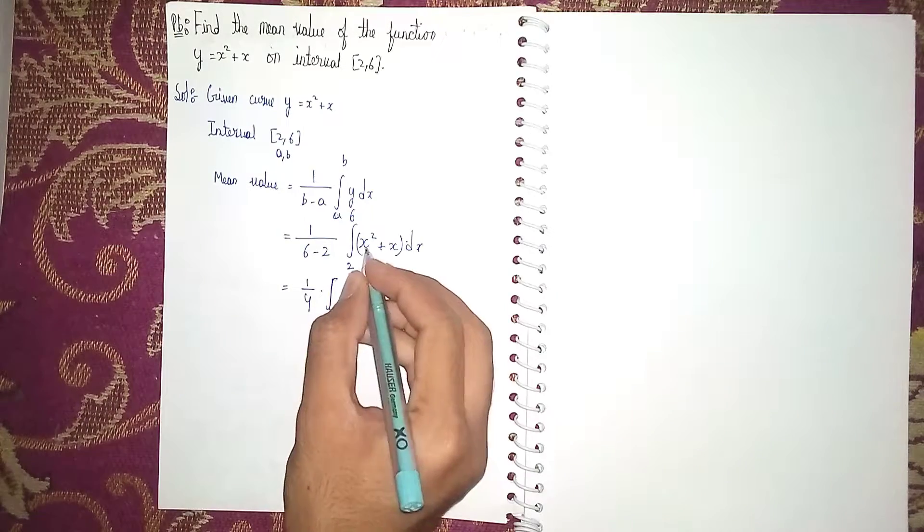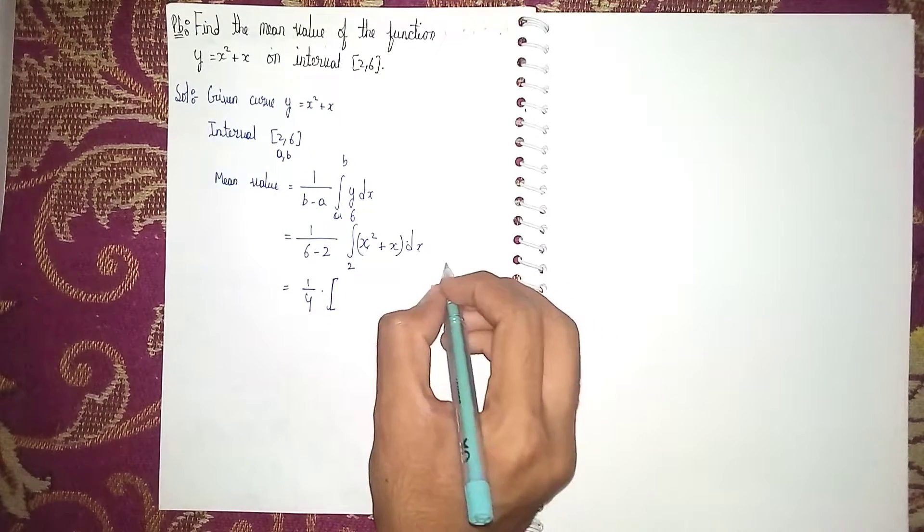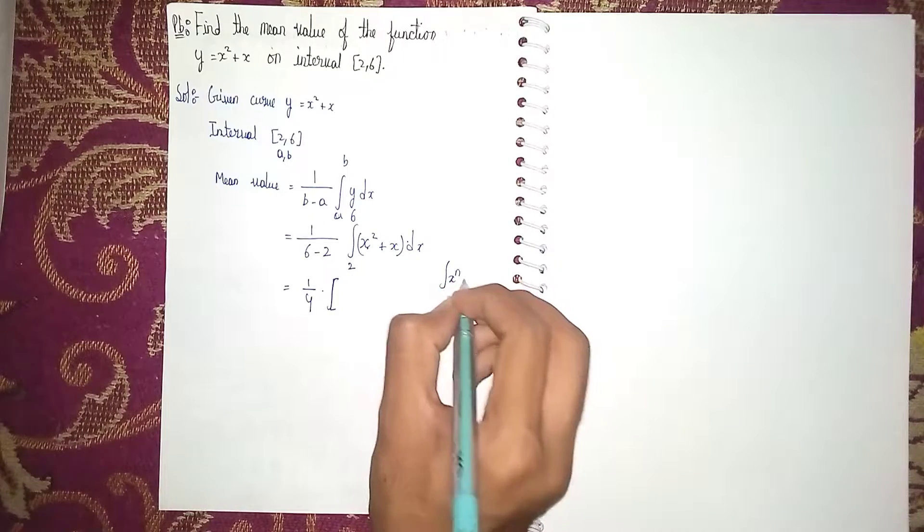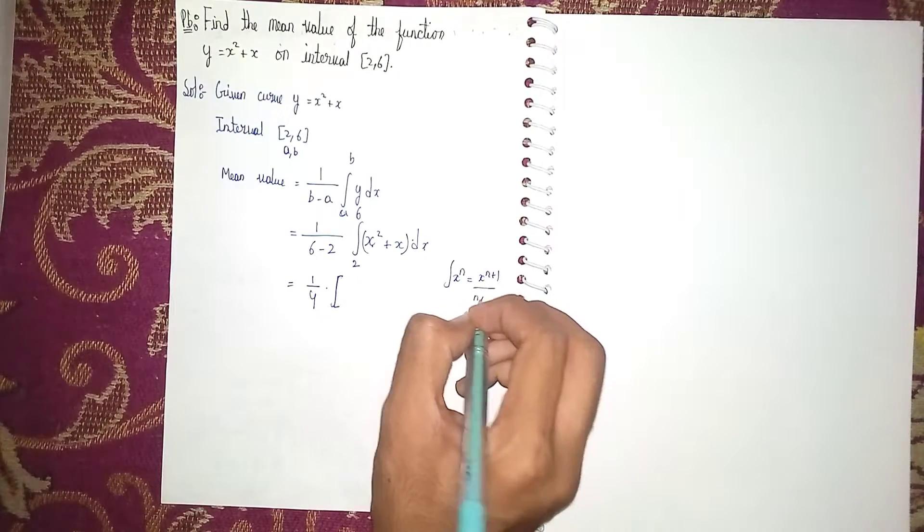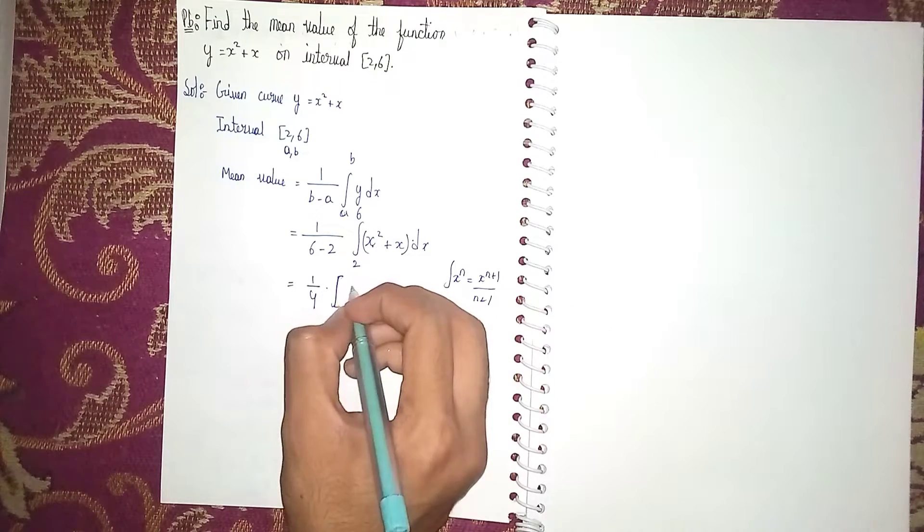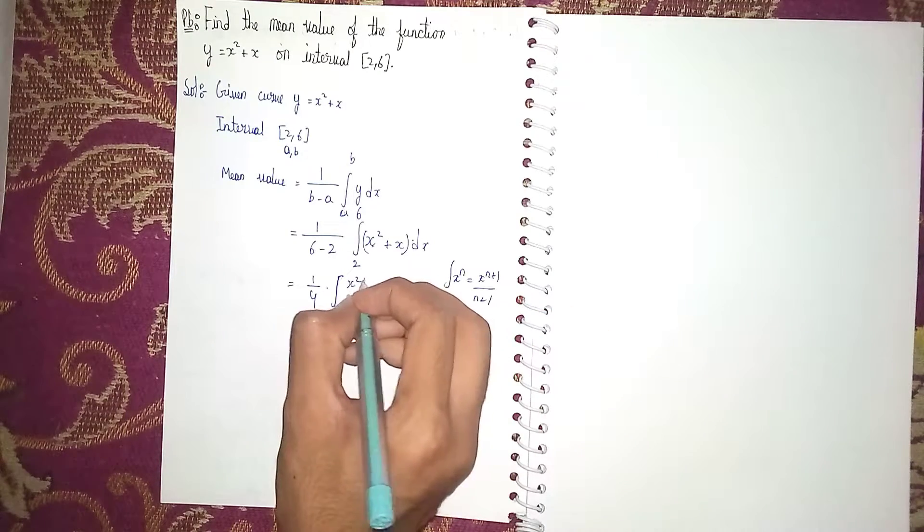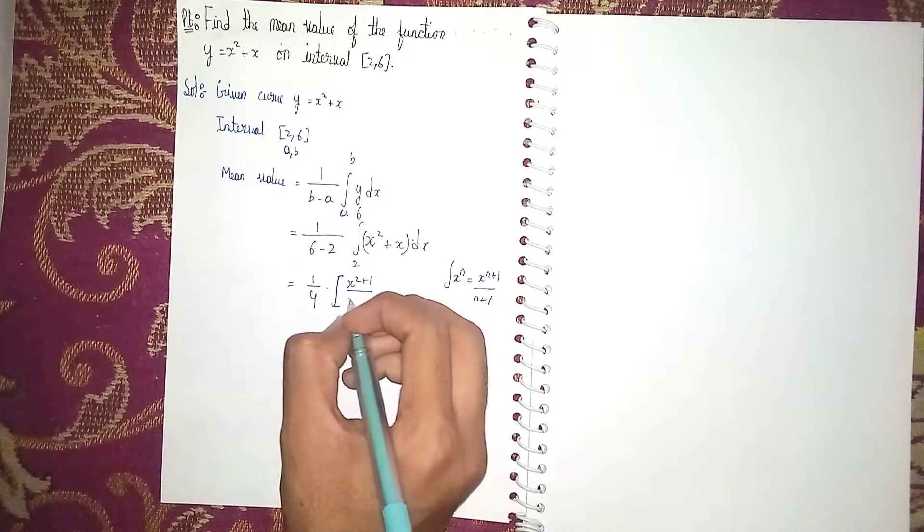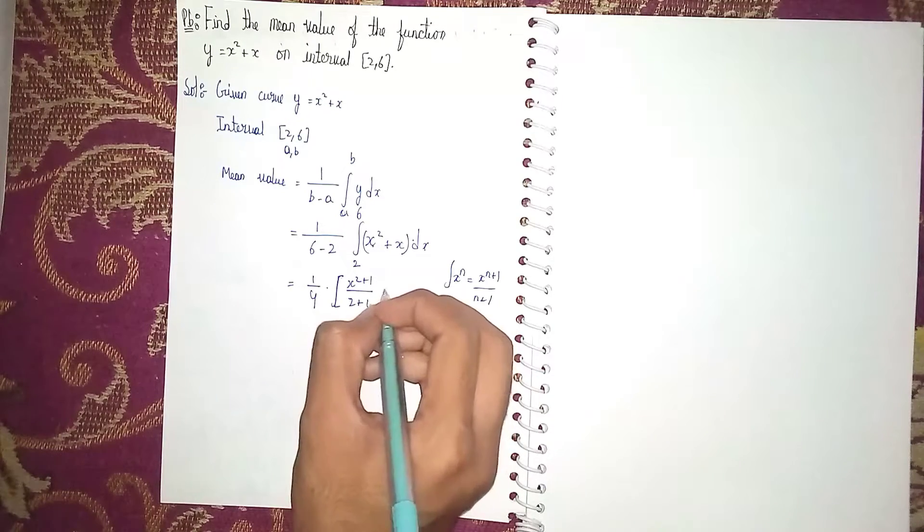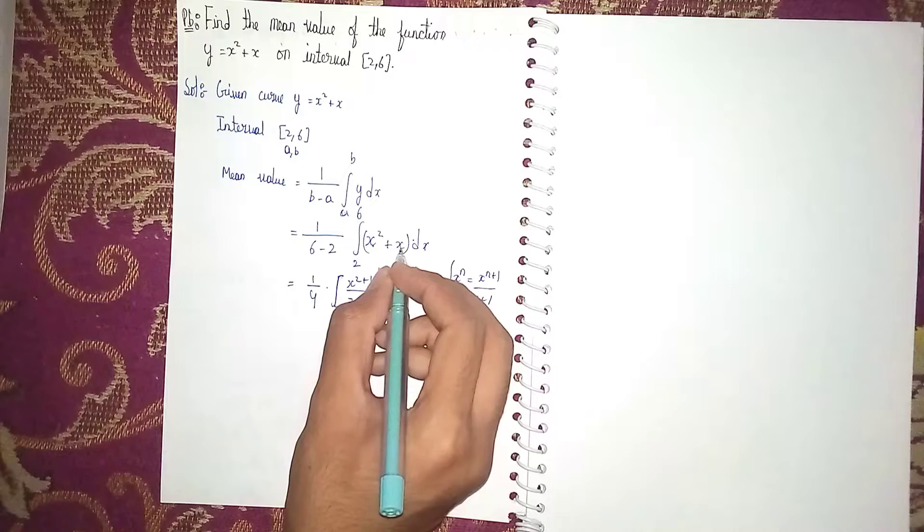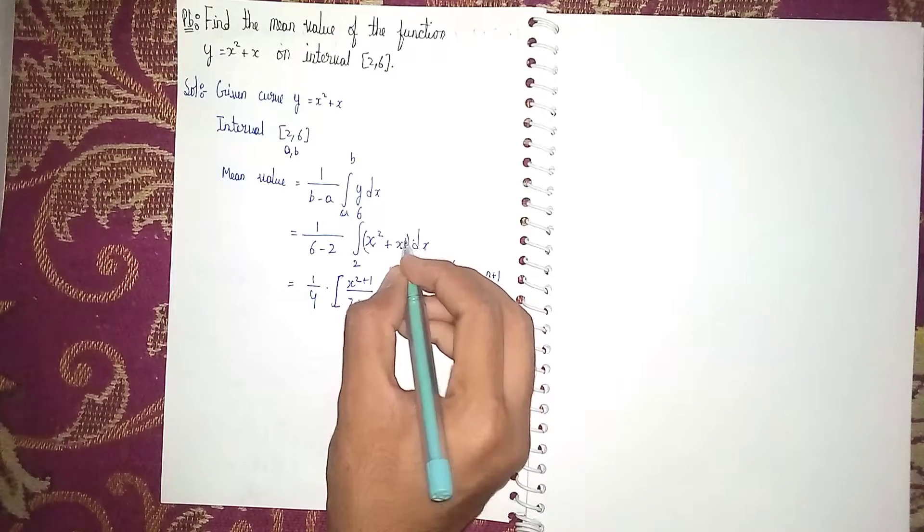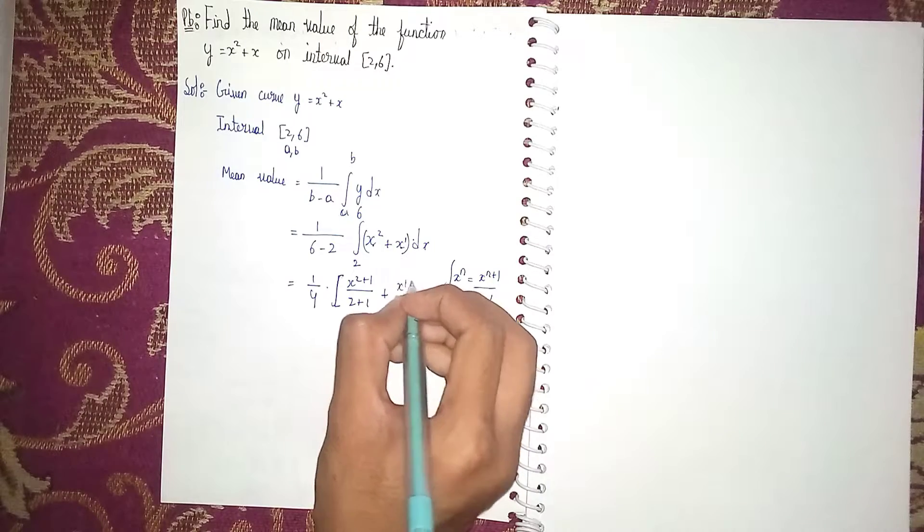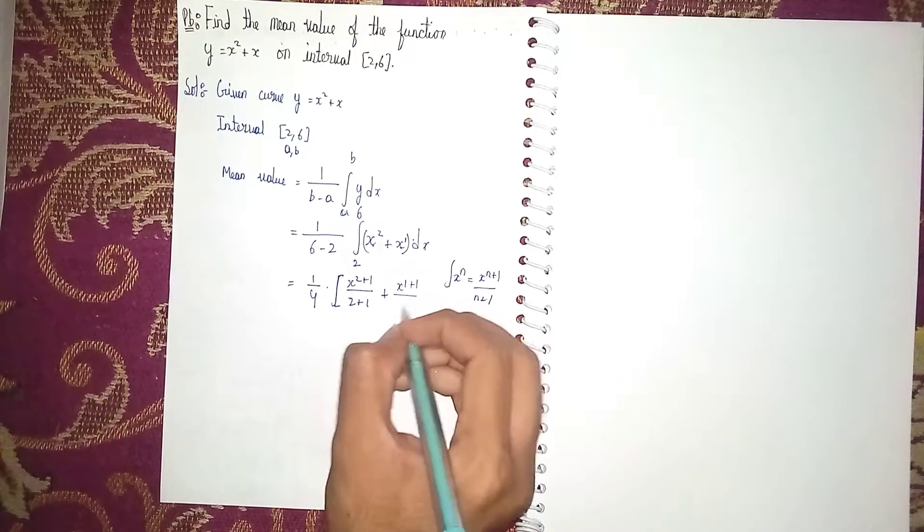Now integrating. It is in the form of integral x^n. The integral of x^n = x^(n+1)/(n+1). So it becomes x²⁺¹/(2+1), then plus x¹⁺¹/(1+1).